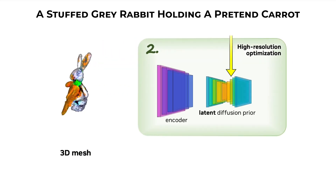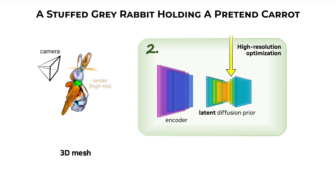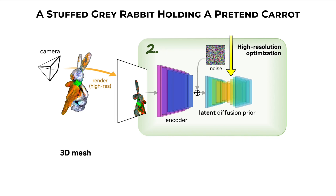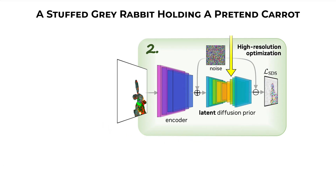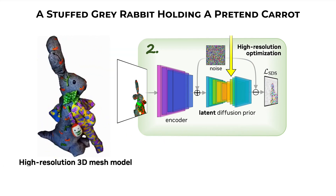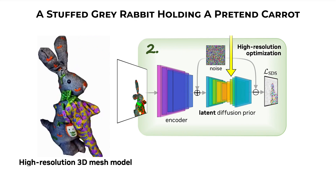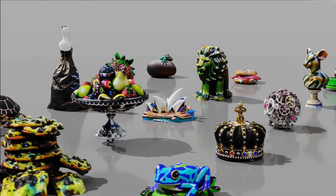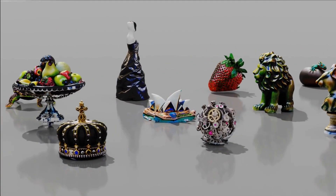In the second stage, a high-resolution text-to-image latent diffusion prior is used. This time, high-resolution images are sampled and rendered to update the 3D mesh, like the instant neural graphics pipeline in the first stage. Magic 3D generates a high-resolution textured 3D mesh model ready to be used in 3D modeling software or graphics rendering engines like Nvidia Omniverse.